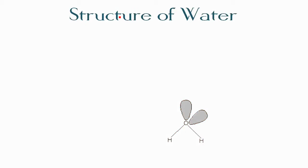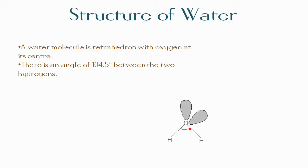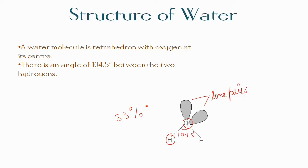The water molecule has a bent geometry. A water molecule is tetrahedral with oxygen at its center. There is an angle of 104.5 degrees between the two O-H bonds, and there are two lone pairs present on the oxygen atom. The large electronegativity difference between hydrogen and oxygen confers 33 percent ionic character on the O-H bond. Water is also a highly polar molecule.